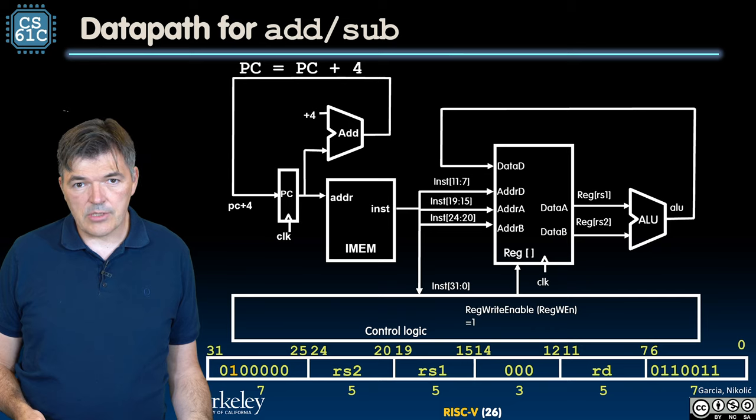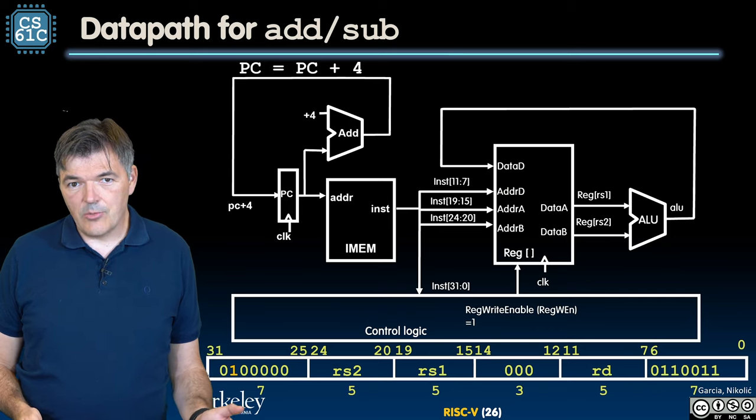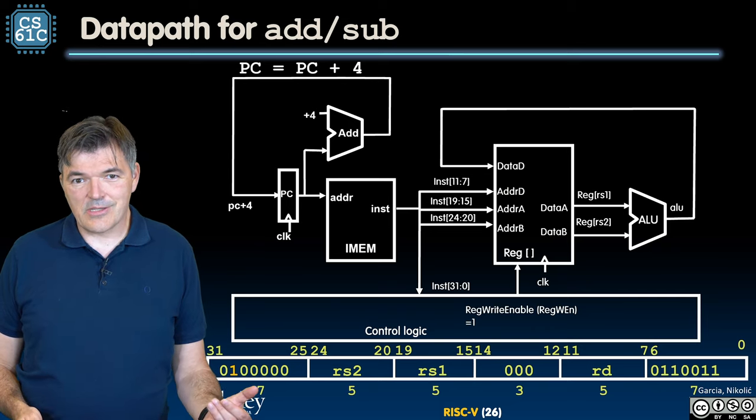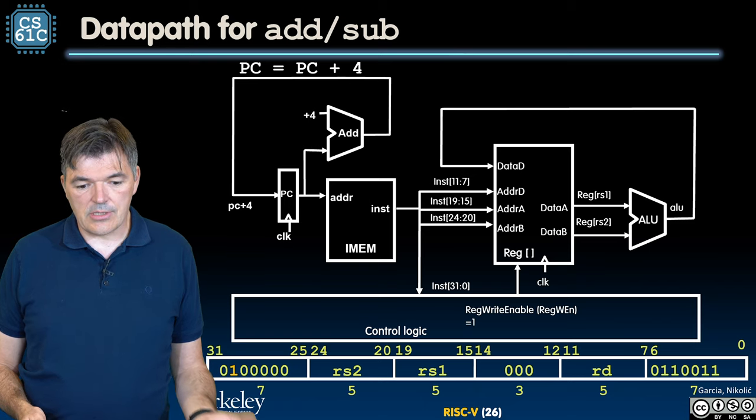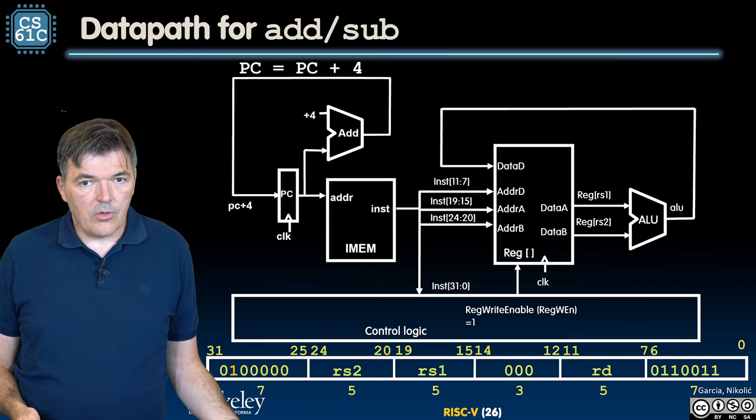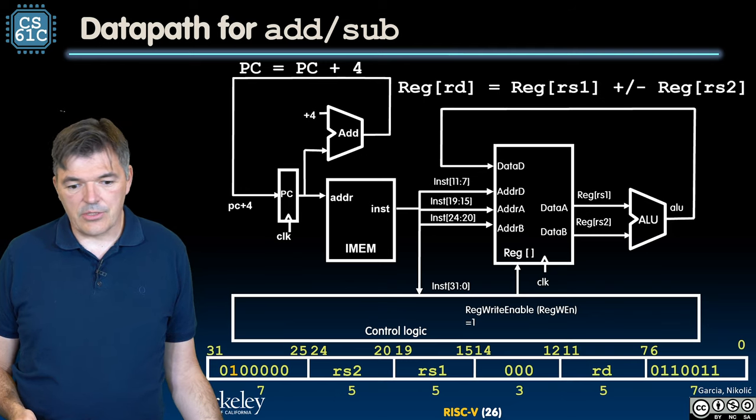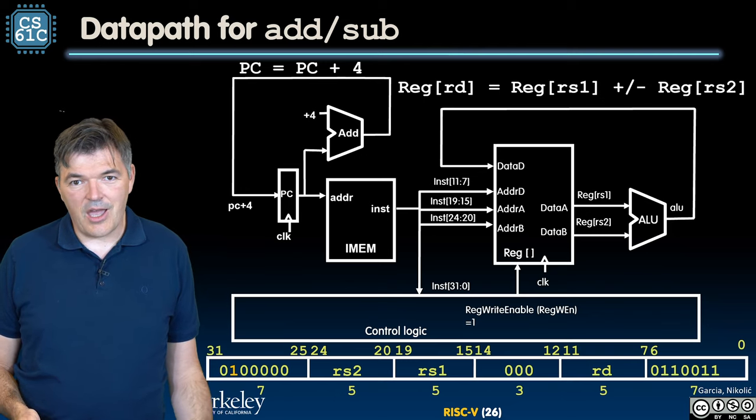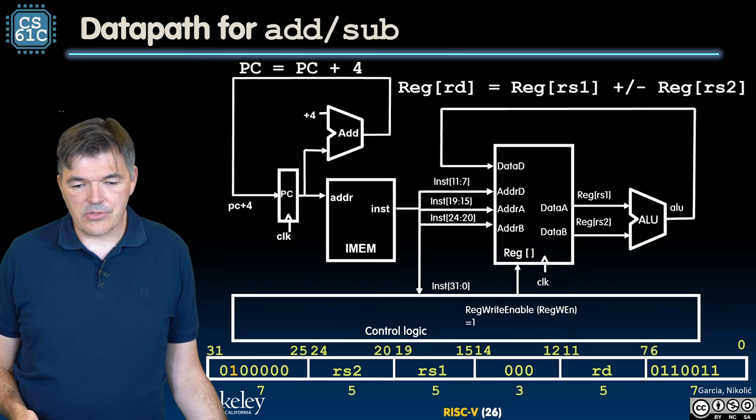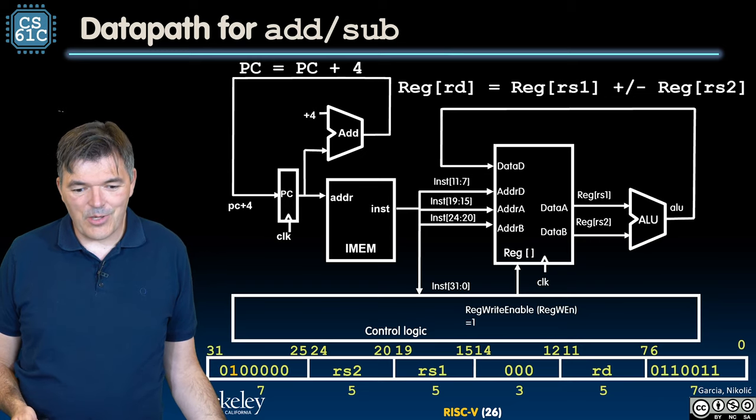That ALU before was just an adder, but now we need an ALU that is capable of doing both addition and subtraction. All we need to tell that ALU is to perform addition or subtraction to support add or sub instructions. That's all. We are pretty much done.